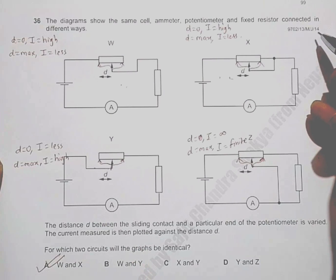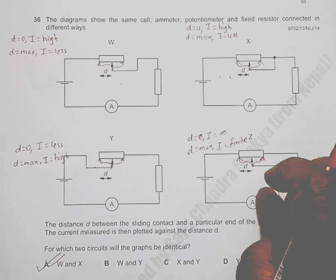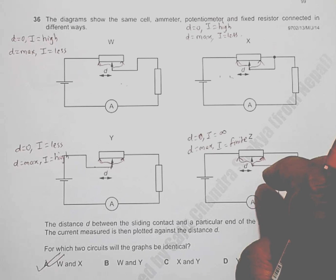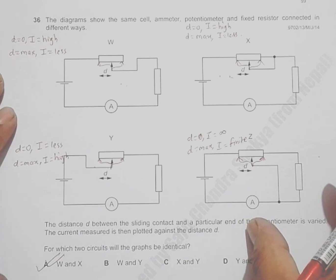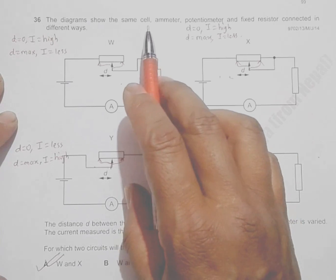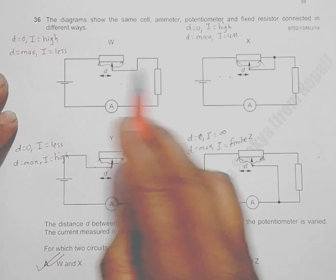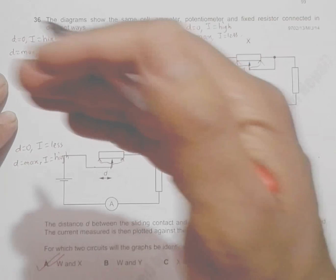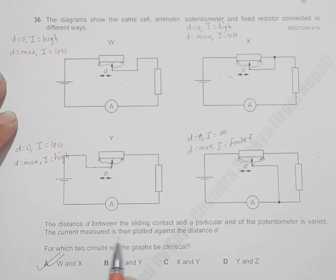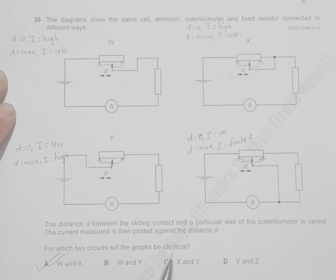This is question 36 from the 2014 May/June Paper 1/3. The question has four diagrams. All devices are the same: a cell, a potentiometer, and a fixed resistor. The distance d between the sliding contact and the left end of the potentiometer is varied, and the current is then plotted against d. We need to find for which two circuits the graph will be identical.